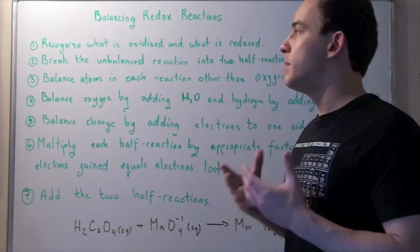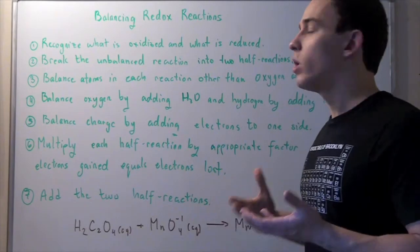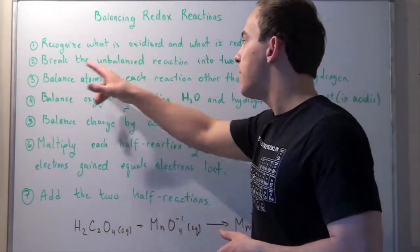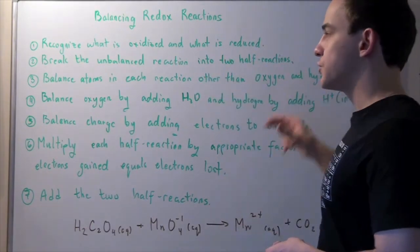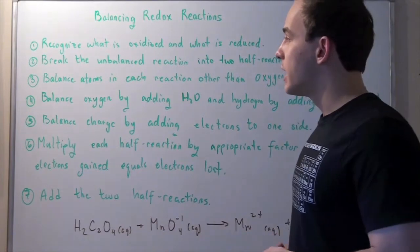In the first step, you basically have to recognize what atom is oxidized and what atom is reduced. Next, you break down the unbalanced reaction into two half-reactions, an oxidation reaction and a reduction reaction.